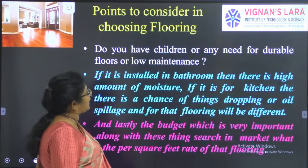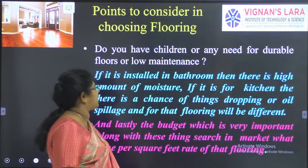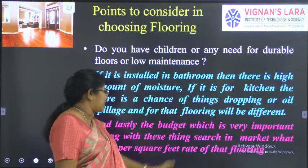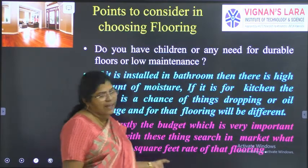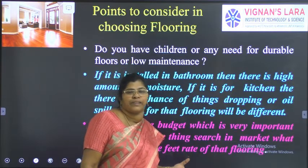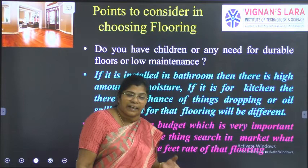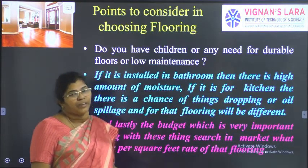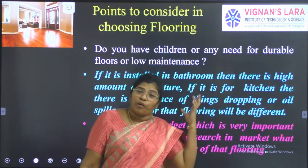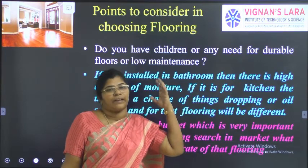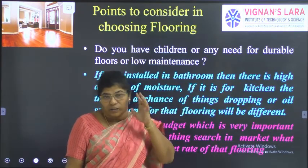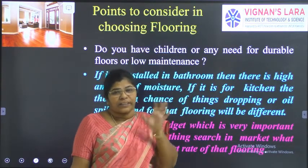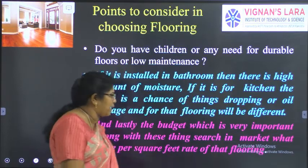If you have children or need durable, low-maintenance flooring — in bathrooms there is high moisture, in kitchens there are oil spills. The last important factor to consider when going for flooring is the budget. Tiles range from 25 to 450 or even 750 rupees per square feet. Some imported tiles cost up to 1200 rupees per square feet. What type of flooring you choose mainly depends upon the budget.